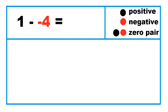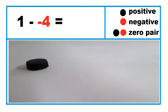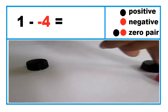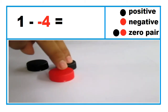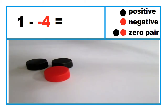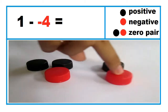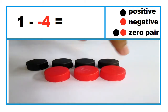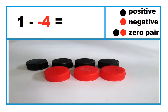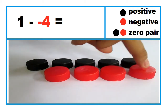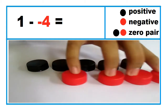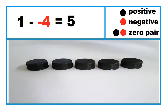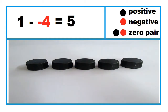Another example: 1 minus negative 4. Before you can take 4 red caps from one black cap, introduce four zero pairs, then take away four red caps. So, 1 minus negative 4 is 5.